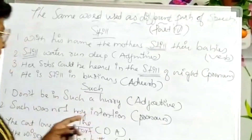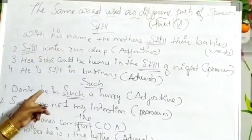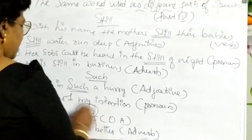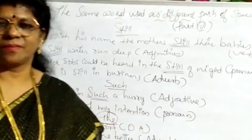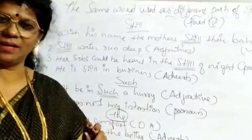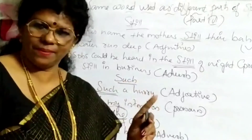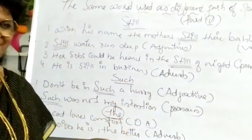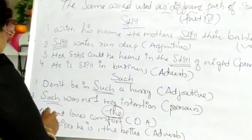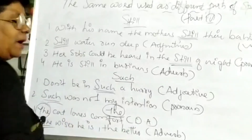Next word: 'such.' In 'Don't be in such a hurry,' 'such' shows an adjective. In 'Such was not my intention,' 'such' shows a pronoun. Next word: 'the' — the definite article, which we have already studied thoroughly. In 'The cat loves comfort,' 'the' functions as a definite article. In 'The wiser he is, the better,' 'the' shows an adverb.